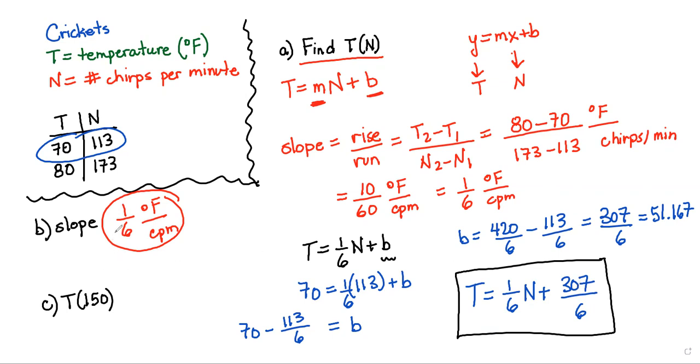B is already done because the slope is then equal to 1/6 degrees Fahrenheit per chirps per minute. So basically, every time we get an increase of 6 chirps per minute, that's 1 degree Fahrenheit increase in temperature. So pretty cool.